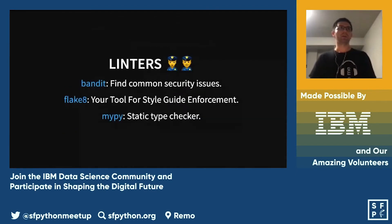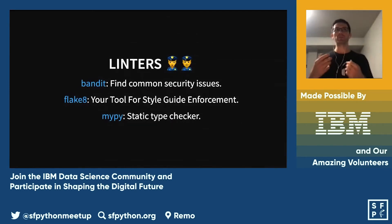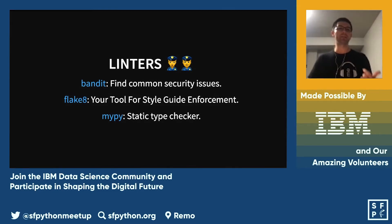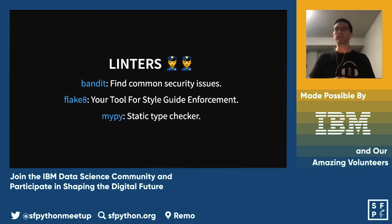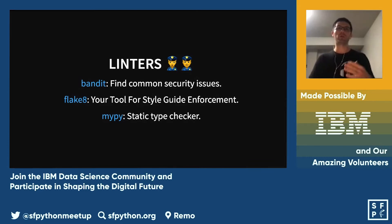Then we have linters. Linters, as opposed to formatters, won't change your code — they just give you warnings and errors. Bandit is about security: it gives you alerts about potential leaks of API keys, passwords, and tokens based on variable names. It warns you about unsafe packages like random or pickle, weak algorithms like MD5, bad file permissions, and in Django, the mark_safe command.